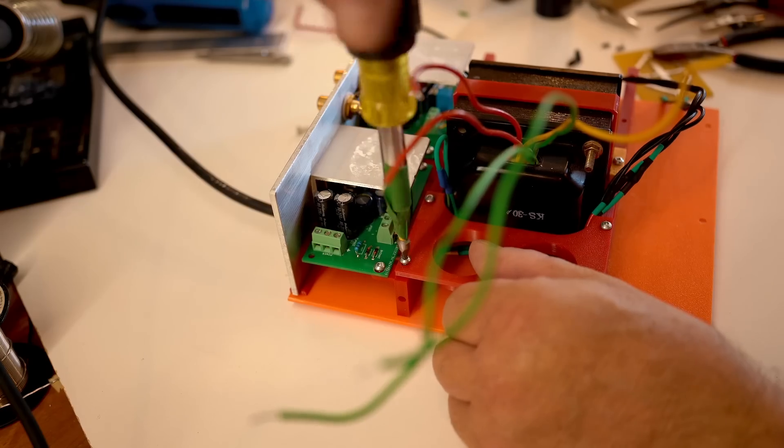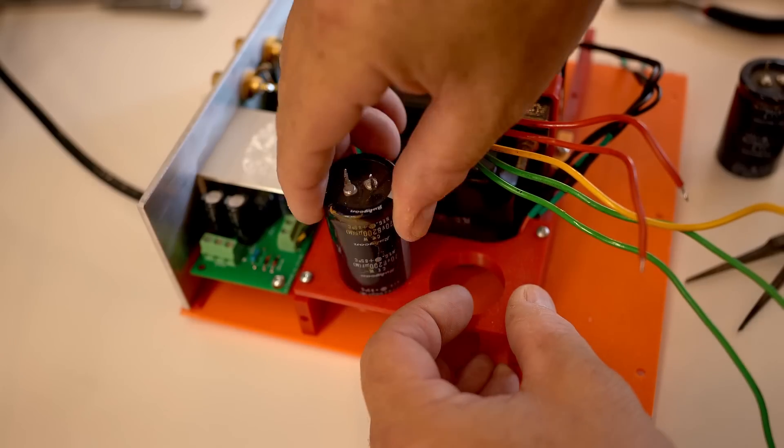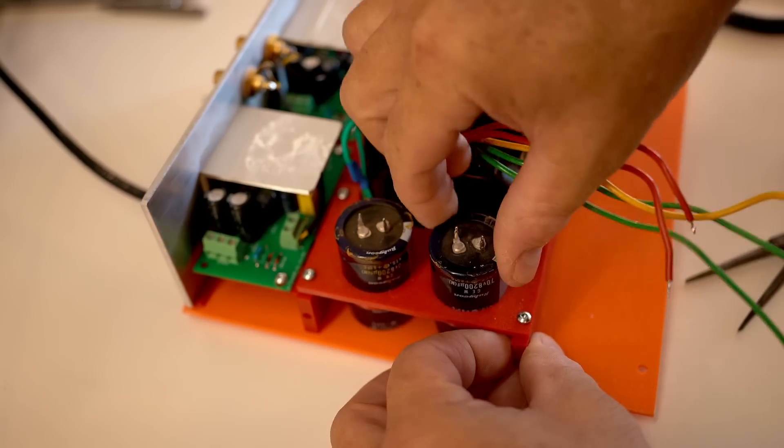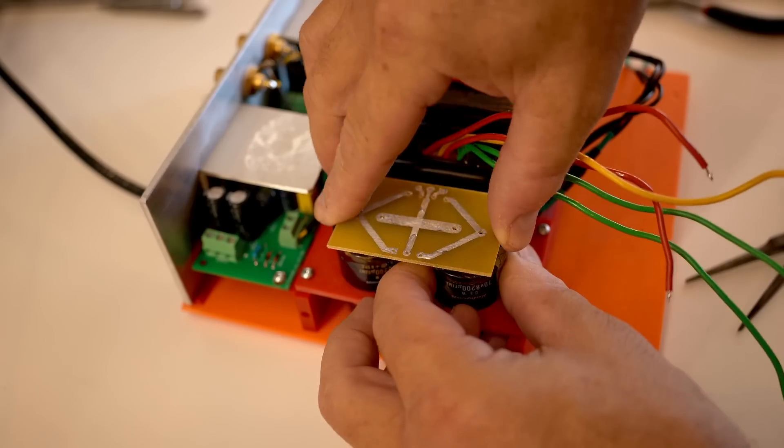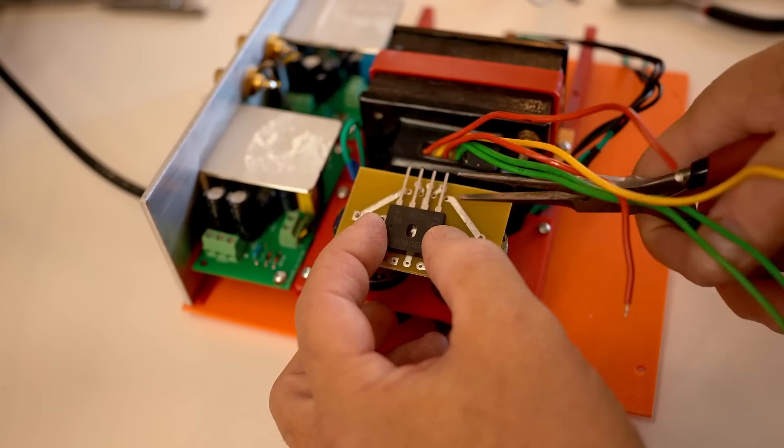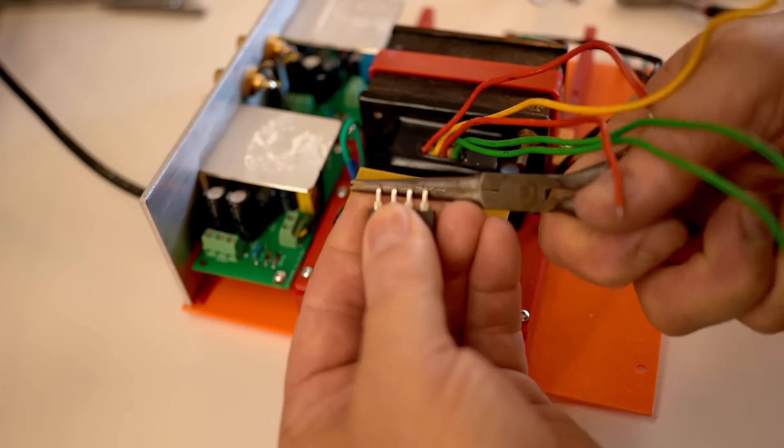The part that I'm putting on here holds the power supply capacitors. I've got two here, big ones. And I made a small circuit board that fits right on top. And the rectifier goes into that from the top as well.